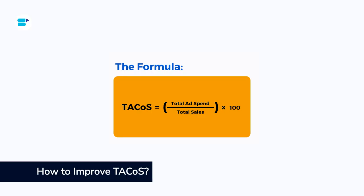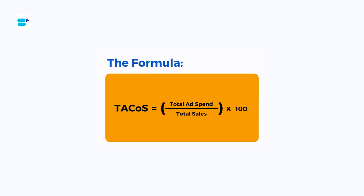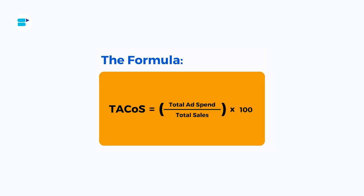TACOS is ad spend divided by total sales, so increasing overall sales or decreasing ad spend will both improve TACOS. The easiest short-term way to improve TACOS is to re-evaluate your budgets. A more long-term fix would be to reorient your ad spend towards lower-funnel branded campaigns — this will improve your relevance and help grow your organic sales at a reduced advertising spend. You can also utilize Amazon PPC tools like negative keywords and an ad group structure focused on efficiency, or ensure you are only advertising items with high sales potential.